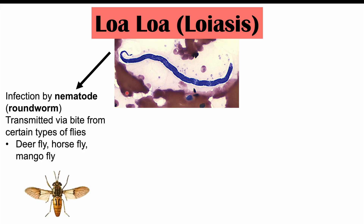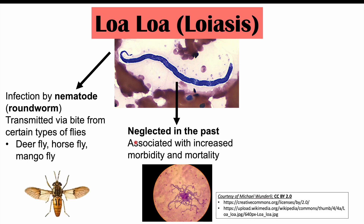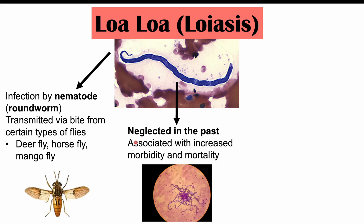Loa loa is a nematode or roundworm, so it's an infection that occurs via a bite from certain types of flies — the deer fly, horse fly, or mango fly. It was a particularly neglected infection in the past because it was thought to be benign, but now there's new evidence showing associated increased morbidity and mortality when patients are not treated, including issues with the heart and the kidneys.